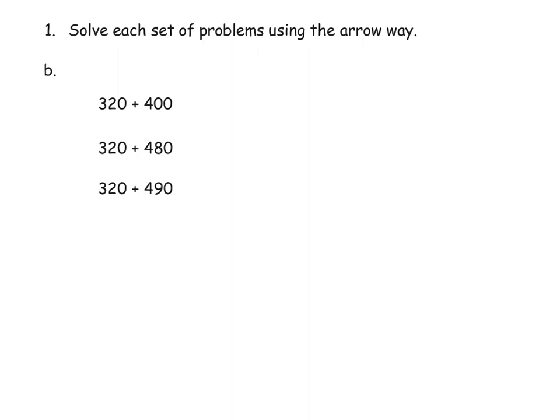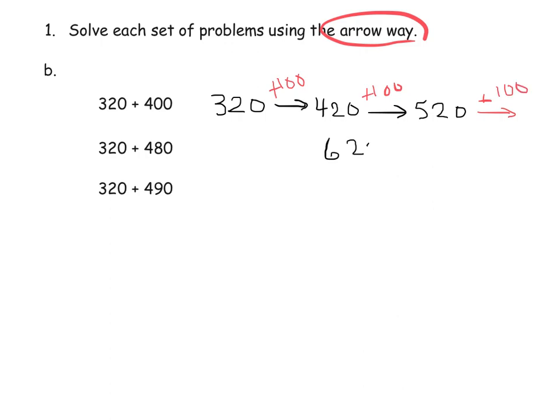All right, because on the previous slide I went into great length as to the arrow method, I'm going to go a little bit quicker on this. So we're going to start for this first problem right here, 320 plus 400. We're going to start with 320, and I might add by 100. That gets me to 420. Add by another 100. That gets me to 520. Add by another 100. That gets me to 620. And then finally add by one final 100. That gets me to 720.